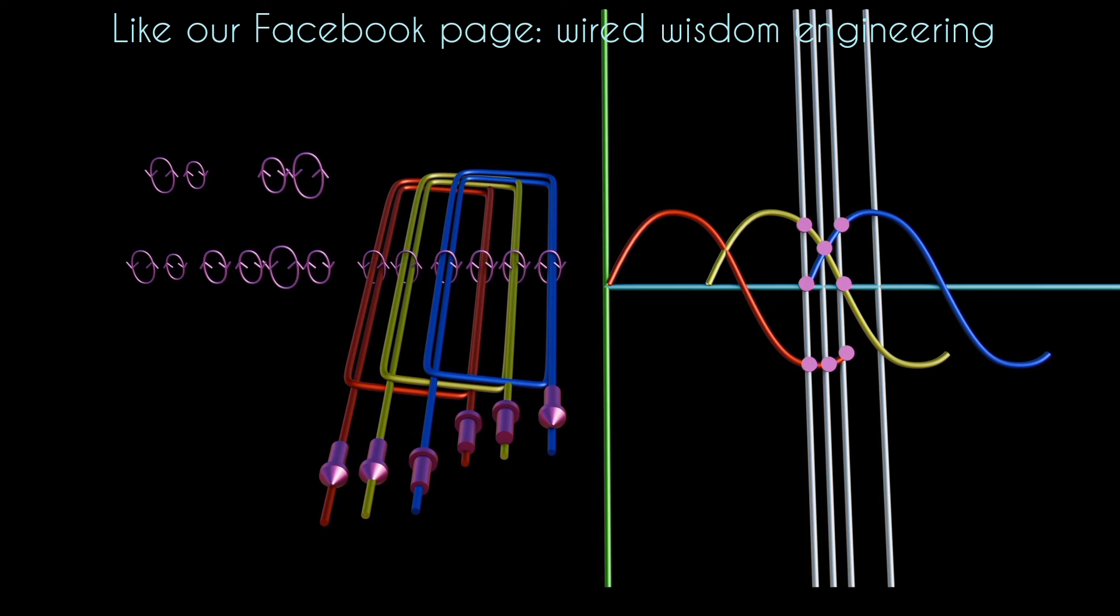The last scenario, the red phase is zero, yellow phase is negative, and blue phase is positive. Then let's freeze the magnetic field produced at this scenario.